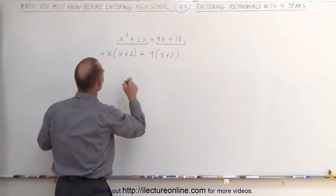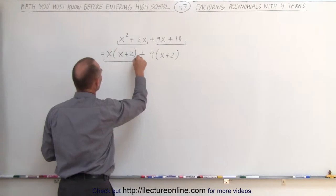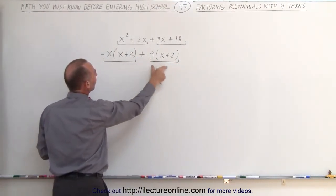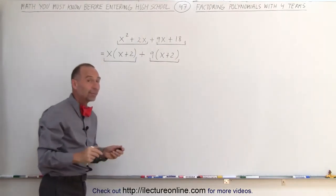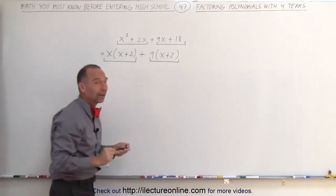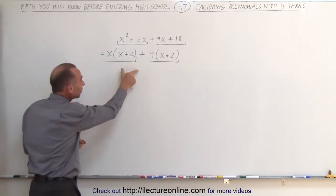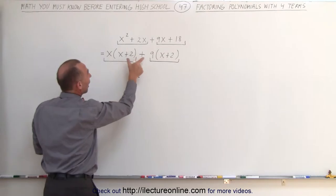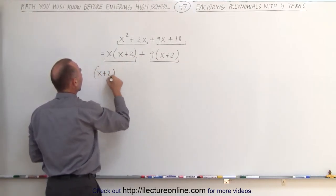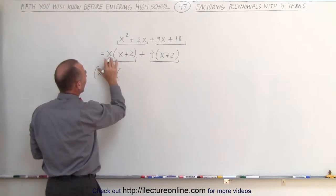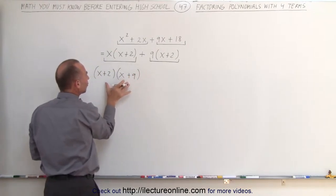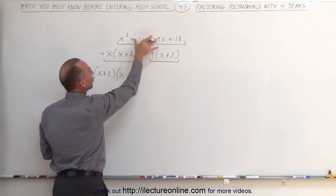Now you group them together again like this. You look at this term and this term, and see what is common between them. It becomes quite obvious that you have (x + 2) on the left side and (x + 2) on the right side, which means we can factor out (x + 2) from both of these terms. When we do that, we get (x + 2), and then we write what we have left: an x and a plus 9. This is now the factored form of the original problem.